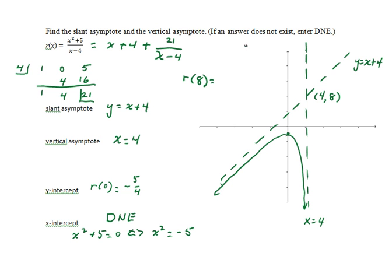r of 8 would be 64 plus 5, or 69, divided by 8 minus 4, which is 4, evaluating to 17 and a fourth. So this point is up near the 17 mark on the graph. As x approaches 4 from the right, the curve approaches positive infinity, and as x approaches positive infinity, y approaches x plus 4. Again, we see symmetry around the point (4, 8) where the two asymptotes cross.